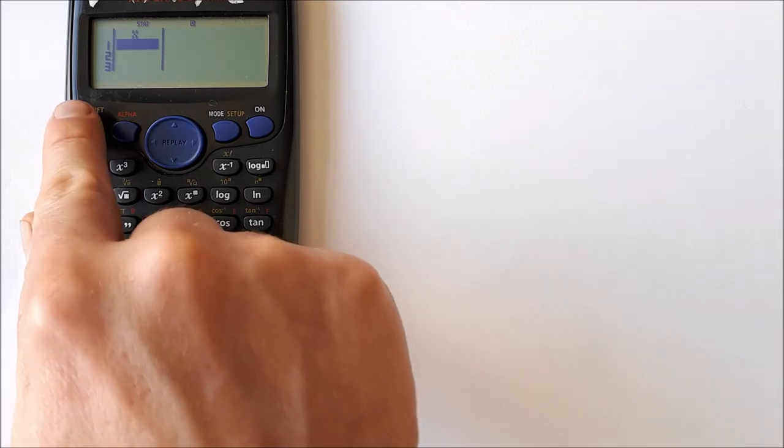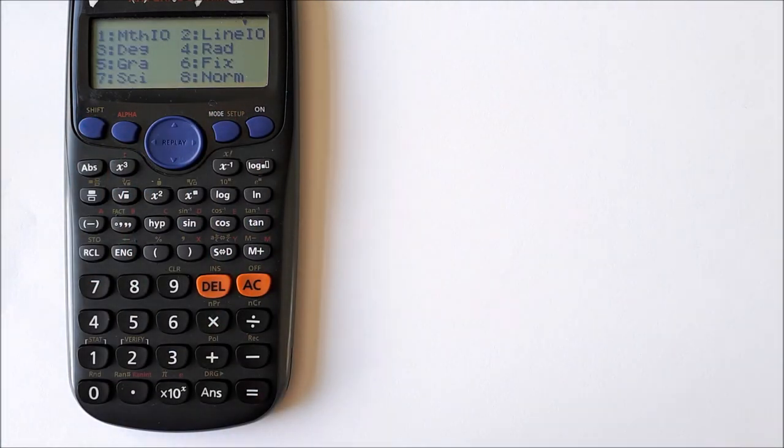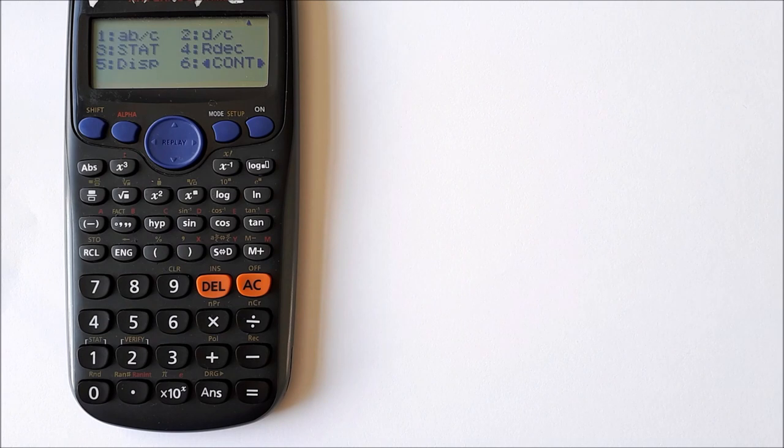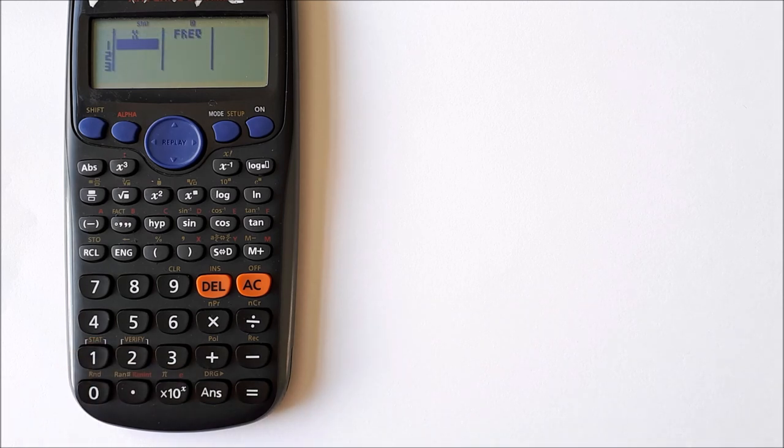To get the frequency column, press Shift Mode, press down, then select 3 for Stats and frequency on or off. Press 1 for on. Now we have a table with two columns: x and frequency.